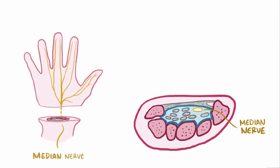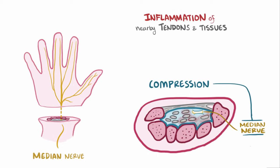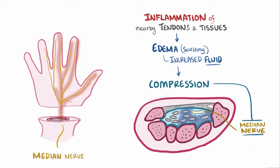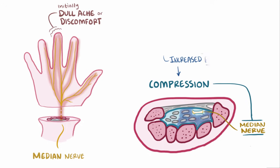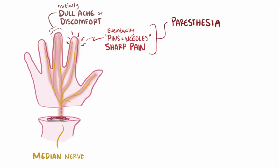Carpal tunnel syndrome is caused by compression of the median nerve, and that typically happens as a result of inflammation of the nearby tendons and tissue, which creates local edema or swelling, which increases the amount of fluid in a very tight space and essentially puts pressure on the median nerve. Initially that pressure can cause a dull ache or discomfort in any of the areas of the hand innervated by the median nerve. Eventually this discomfort can lead to sharp, pins and needles-like pain, called paresthesia, which can extend up the forearm.